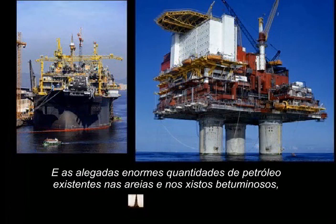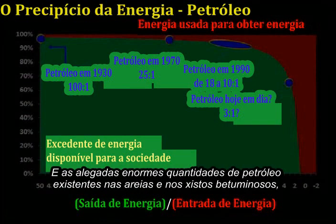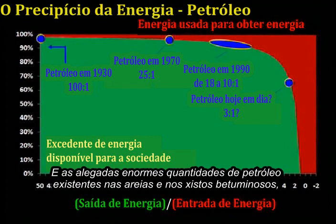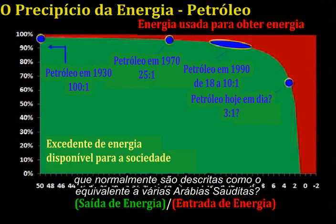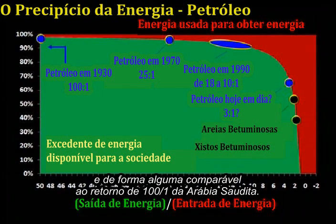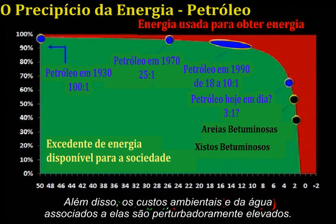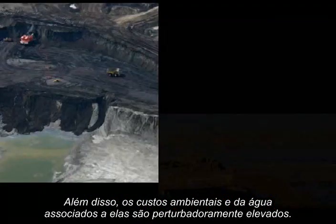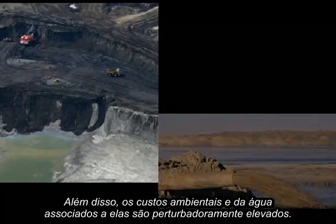And what about the allegedly massive amounts of oil contained within the so-called tar sands and oil shales, the ones that are often described as equivalent to several Saudi Arabias? The net energy values for these are especially poor, and in no way comparable to the 100 to 1 returns found in Saudi Arabia. Further, the water and environmental costs associated with them are disturbingly high.